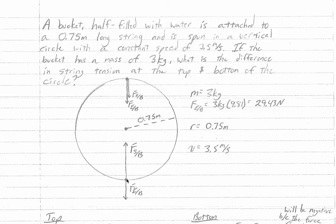At the bottom of the circle we have the force of the earth on the bucket pointing radially outwards from the circle and down, and the force of the string on the bucket upwards. We have the mass listed as 3 kilograms, the force of the earth on the bucket as 24.93 newtons, the radius as 0.75 meters, and the speed as 3.5 meters per second.